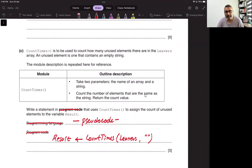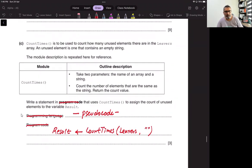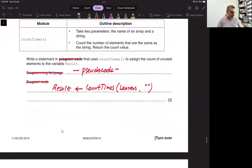Since we have to count what is the number of empty strings in the array, we use double quotation without any space as it was mentioned earlier. Count the number of elements that are the same as the string. So we will write a statement that uses count times. To assign the count of unused elements to the variable result. So we call count times with leavers as the array name and what we need to count is the empty string as double quotation without any space in between. So whatever the counter that count time returns will be caught in result. So that's it.